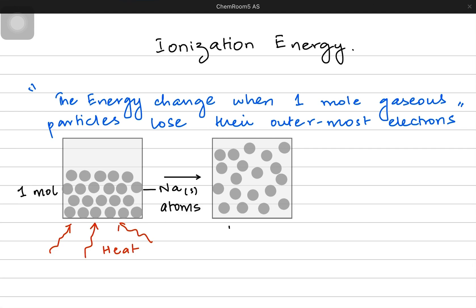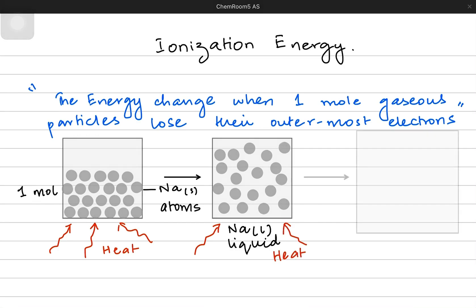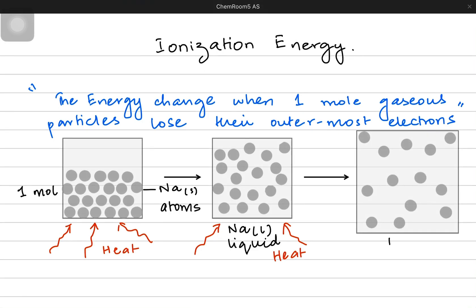When a mole of sodium is now molten in nature, I'm writing the state symbol as L, which means liquid in nature. If I continue to give heat to this sample of sodium, it is going to expand and it's going to become one mole of gaseous sodium sample. So now I have the gaseous atoms lying around in the container — that is why the state symbol is written as G, which means gaseous atoms.